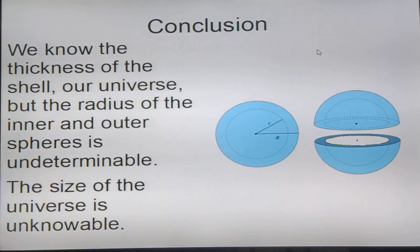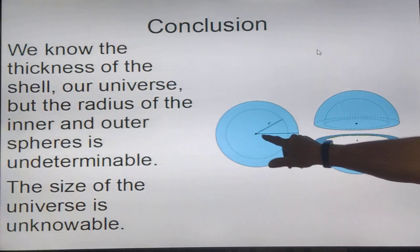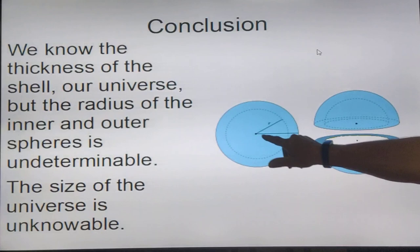So now, as an afterthought, we know the thickness of the shell, that's about the size of the universe. But we don't know what the radius of the inside radius is, or the outside radius is. So if we don't know what the inside-outside radius is, there's no way to know what the size of the universe is.